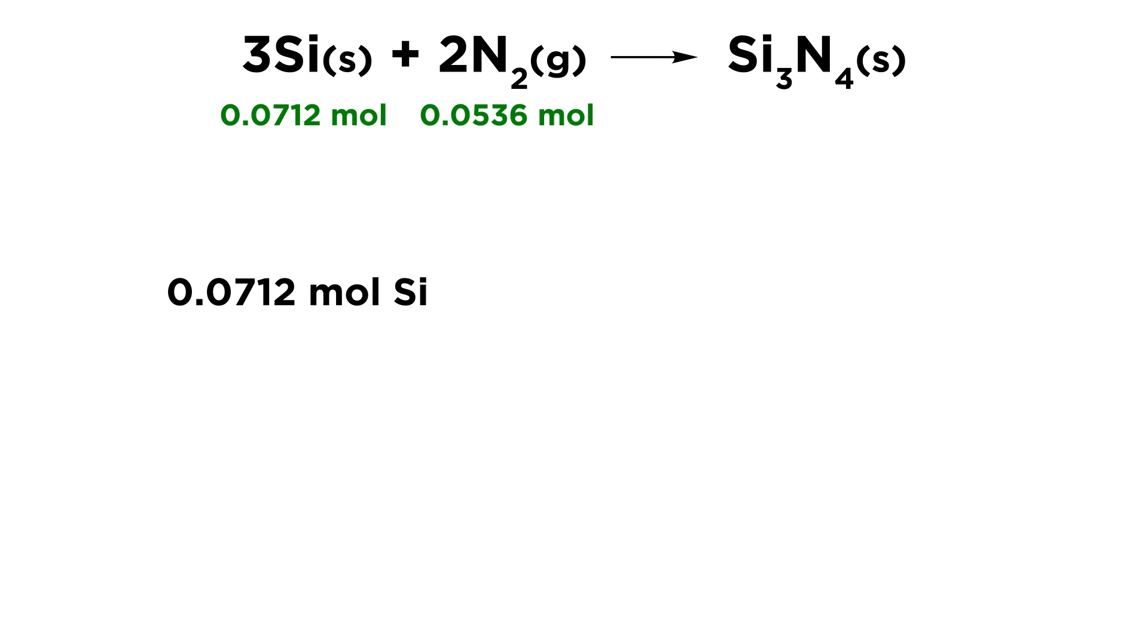So there are two ways that we can do this. One way that we can do this is to take our 0.0712 moles of silicon, and let's find out how many moles of nitrogen would react with this much silicon, according to this reaction. So let's take this and multiply by 2 moles of N₂ over 3 moles of Si. Because for every 3 moles of silicon we need 2 moles of nitrogen, so let's see how much nitrogen we would need. So moles of silicon cancel out, and we get an answer in moles of nitrogen, and it turns out that we would need 0.0475 moles of nitrogen. Now, do we have that much? We do have more than that. We have more nitrogen than we would need to react completely with that amount of silicon. So the fact that we have enough nitrogen for all of the silicon to react means that silicon is the limiting reagent.